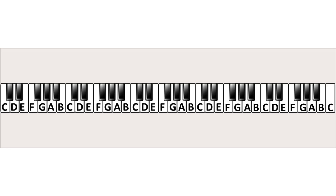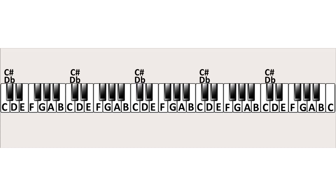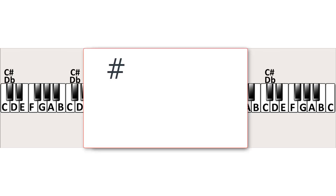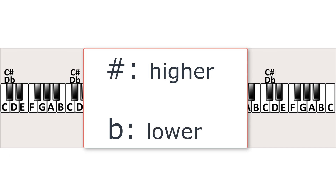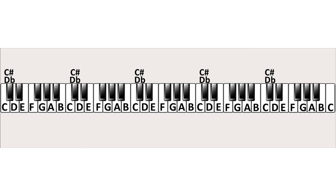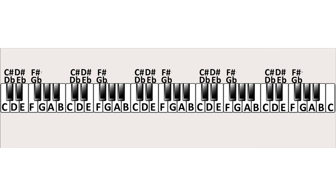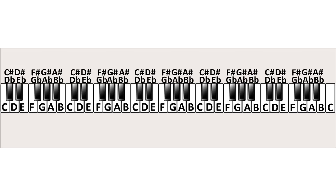What about the black keys? Look at this black key — it's situated between the C and the D. The pitch of that note is higher than a C but lower than a D; it's in between. We call this note C-sharp or D-flat. The sharp sign indicates that it's the note next to the original note, higher in pitch. The flat sign indicates that it's the note next to the original note, but lower in pitch. In the same way we can name the other black keys: D-sharp or E-flat, F-sharp or G-flat, G-sharp or A-flat, and A-sharp or B-flat.